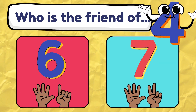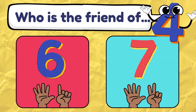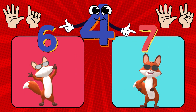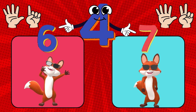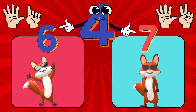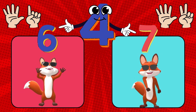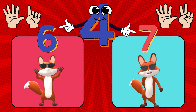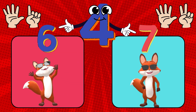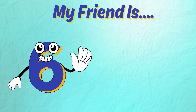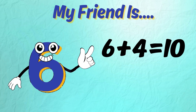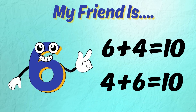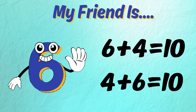Who is the friend of 4? Is it 6 or 7? Do the matching dance! That's right — the friend of 4 is the number 6. 6 plus 4 equals 10 and 4 plus 6 equals 10. That's because of the commutative property — you can switch the numbers and the sum stays the same.